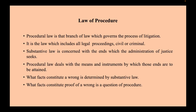The ends which the administration of justice seeks to achieve is provided by substantive law. The procedural law deals with the means and instruments by which those ends are to be achieved. While substantive law determines what facts constitute a wrong, the procedural law determines what facts constitute the proof of a wrong and how it has to be pursued.